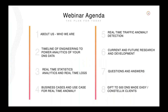First, I want to talk about who we are. This is our webinar agenda. We're going to talk about our timeline of how we got here, the features we've had for a few years — real-time statistics, analytics, and real-time logs. We're going to talk about the business case and use case for AI/ML — artificial intelligence machine learning — and why you want this used in your DNS traffic. We'll also cover our current real-time traffic anomaly detection and future research and development.